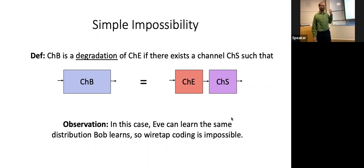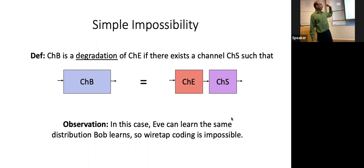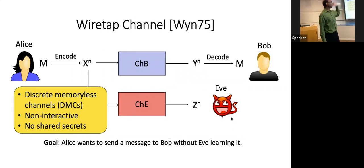When is this possible and when is it not? There's one case where it's very clear it won't be possible: if Bob's channel is a degradation of Eve's channel. That is, if there is some other channel S such that Eve can take whatever she gets from her channel, pass it through S, and in this way completely simulate what Bob sees. Then of course it's impossible — there's no way Bob can learn something that Eve doesn't, because Eve can simulate Bob and run whatever decoding algorithm he has to learn the secret. That's clearly a fundamental limit.